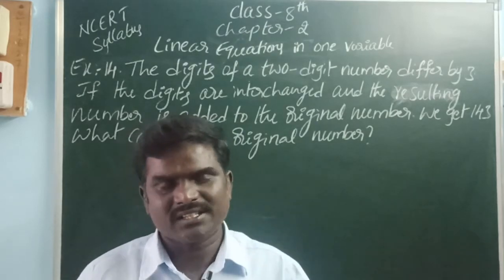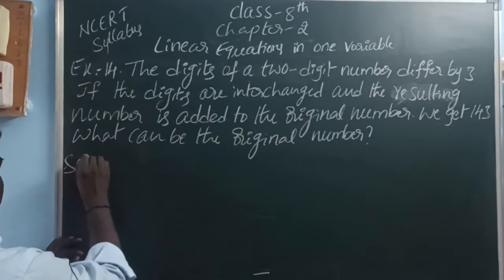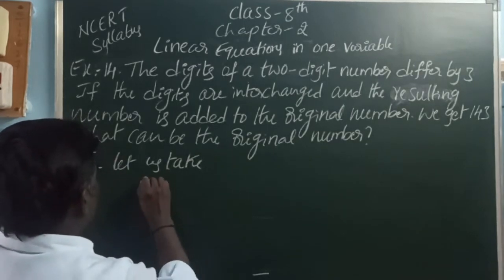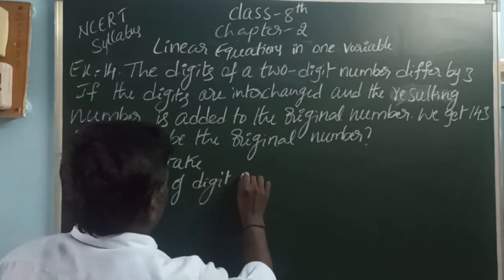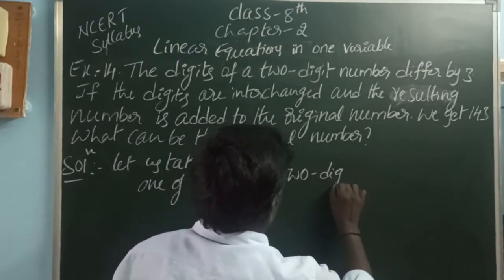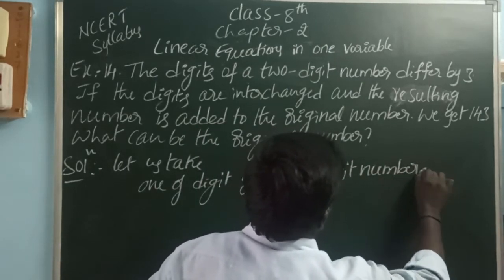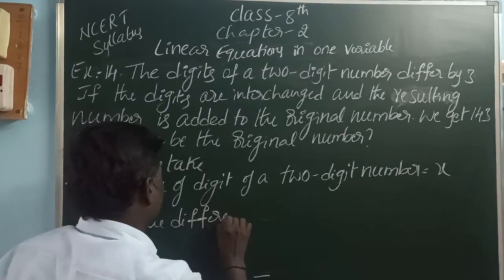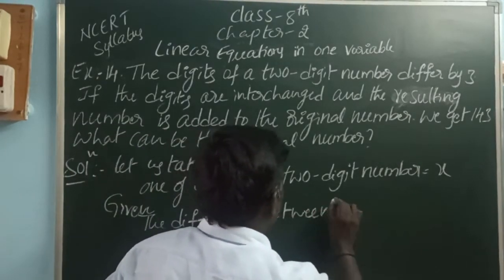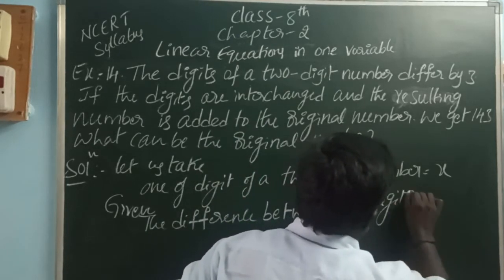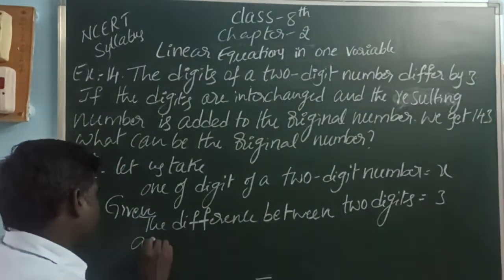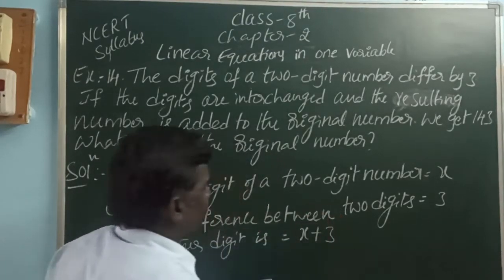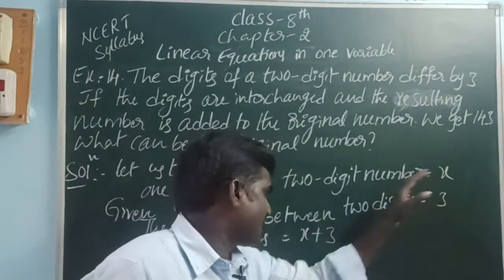Another digit is x plus 3. The difference between x and x plus 3 is 3. So, let one of the digits of the two-digit number be x; the other digit is x plus 3.